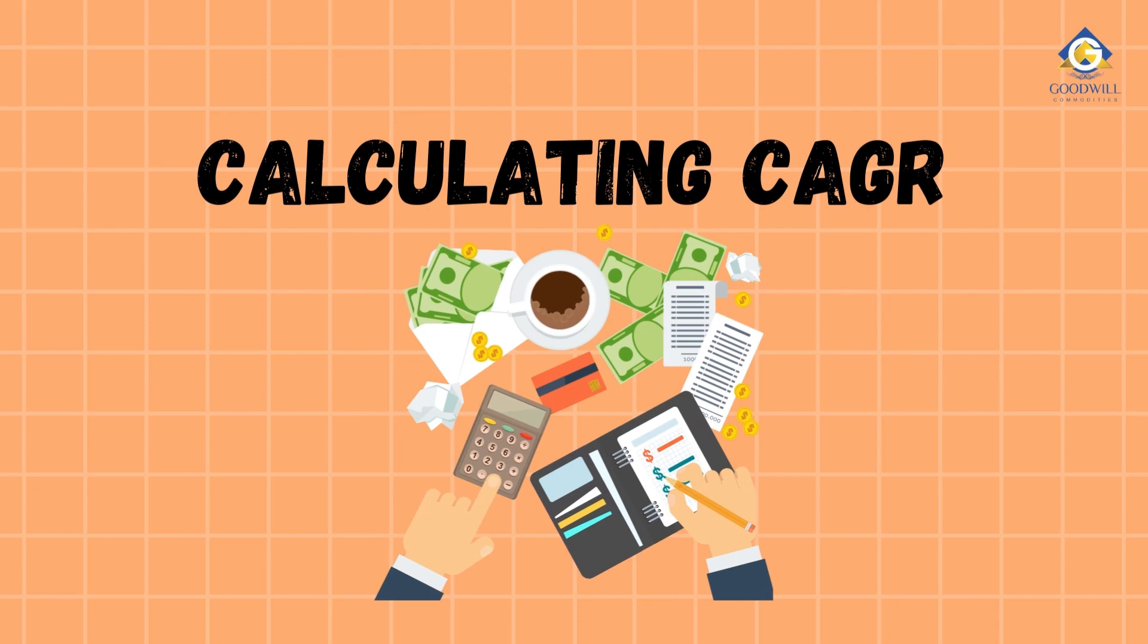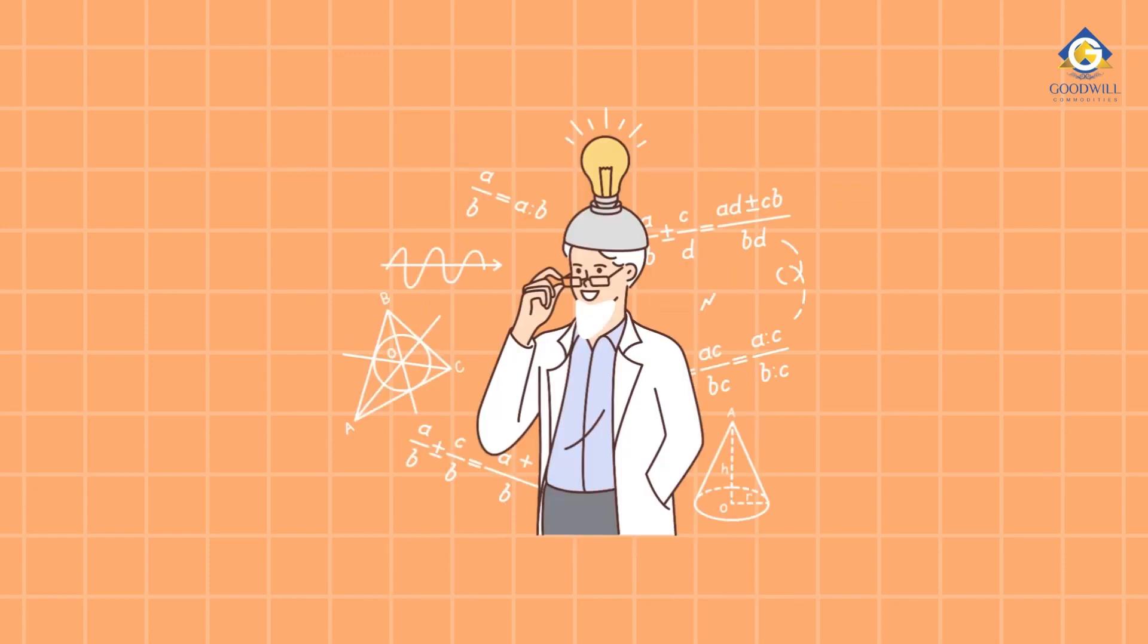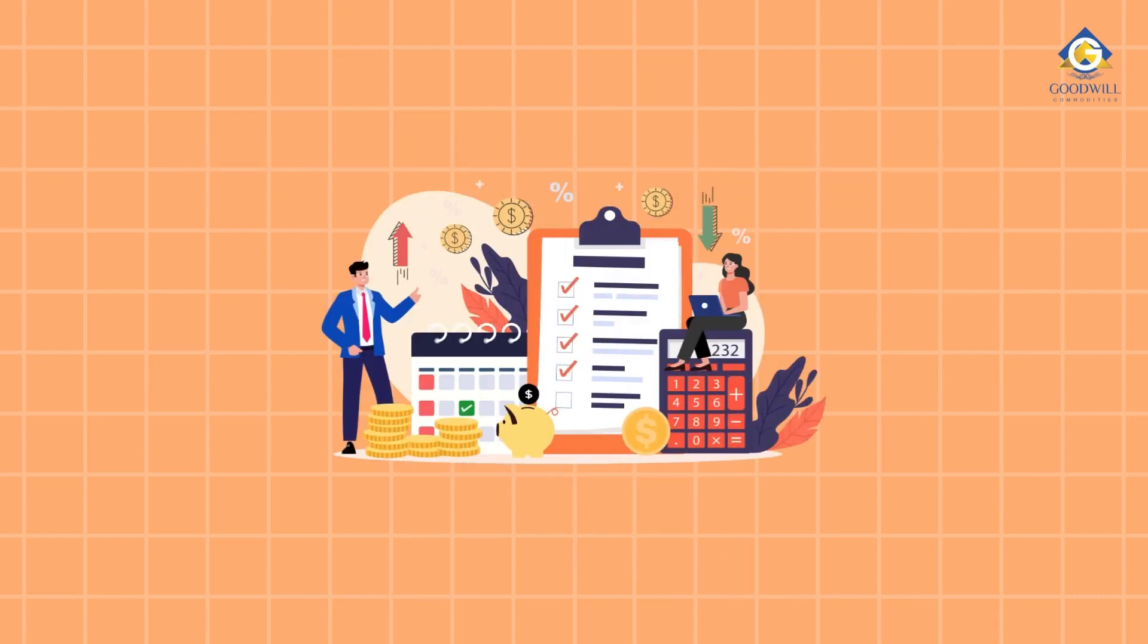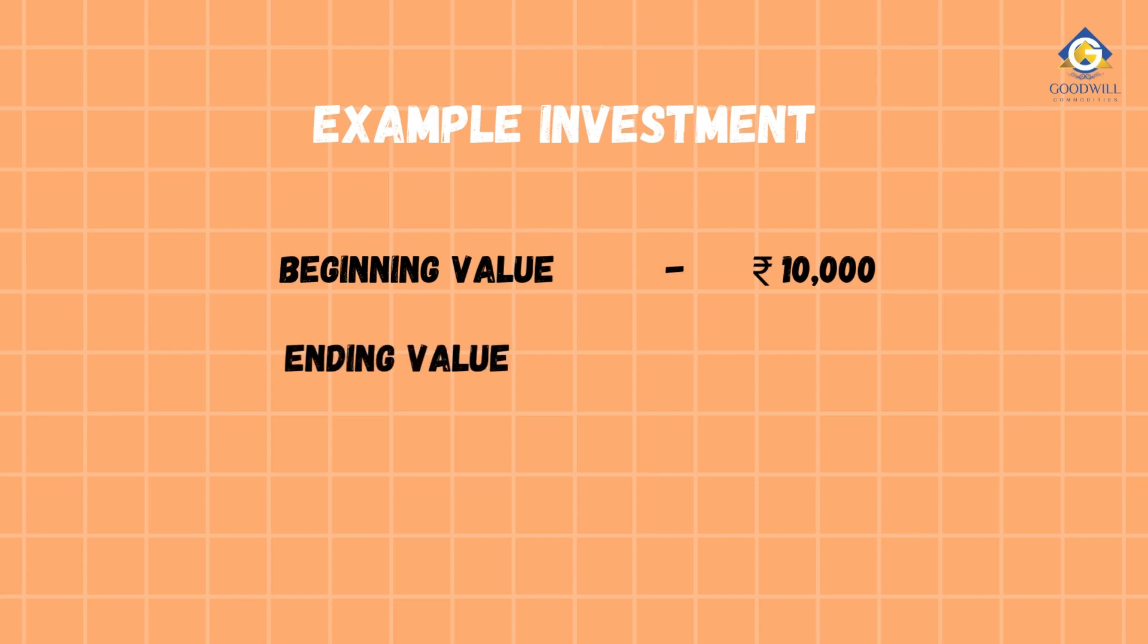Calculating CAGR. Let's put theory into practice and calculate CAGR for a hypothetical investment. Example investment: beginning value will be rupees 10,000, ending value will be rupees 15,000, and investment period, 5 years. In this example, we started with rupees 10,000, and it grew to rupees 15,000 over 5 years.